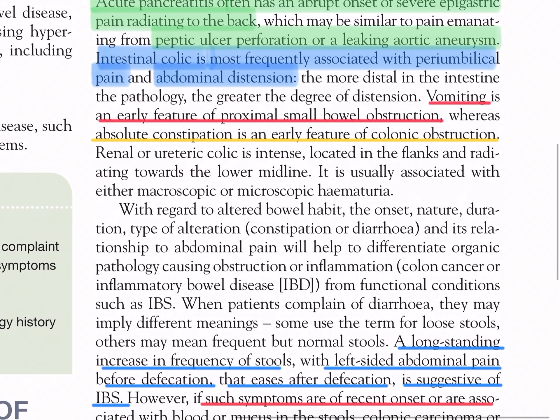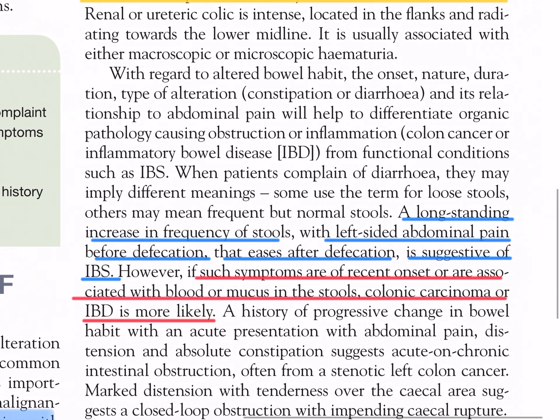With regard to altered bowel habits, the onset, nature, duration, type of alteration — constipation or diarrhea — and its relationship to abdominal pain will help to differentiate organic pathology causing obstruction or inflammation (colonic cancer or inflammatory bowel disease) from functional conditions such as irritable bowel syndrome. When patients complain of diarrhea, they may imply different meanings: some use the term for loose stools, others may mean frequent but normal stools. A long-standing increase in frequency of stools with left-sided abdominal pain before defecation that eases after defecation is suggestive of irritable bowel syndrome.